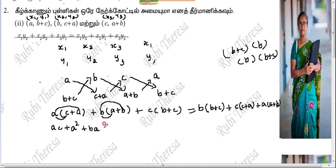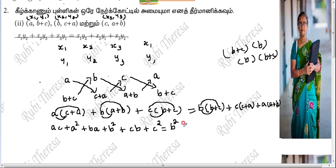B into B is B squared. Plus C into B is CB, which is BC. Plus C into C is C squared. B into B is B squared. B into C is BC. Plus BC, CB, BC.